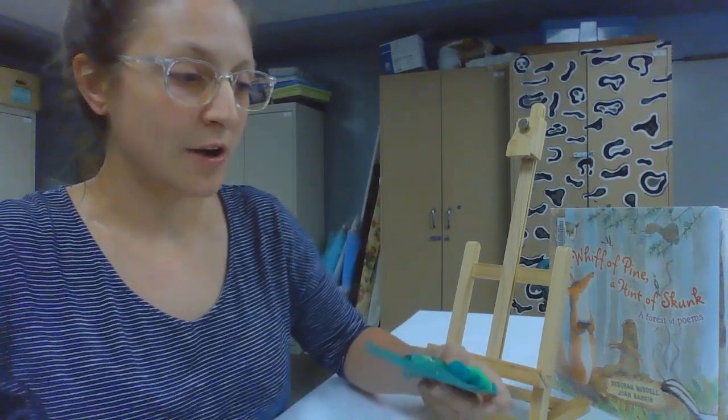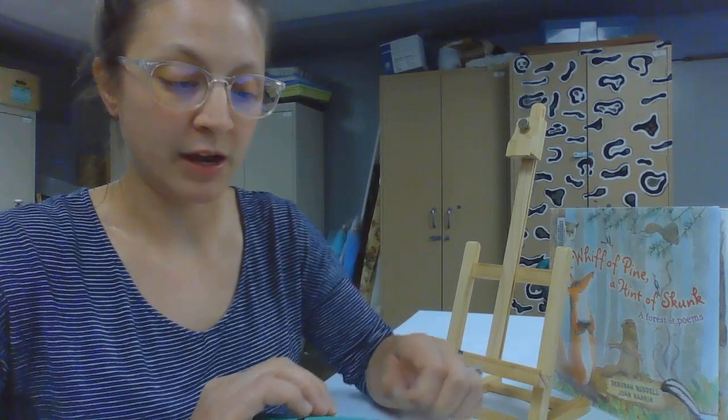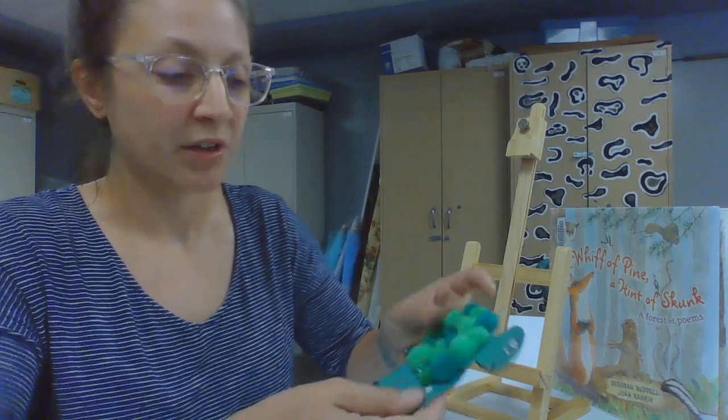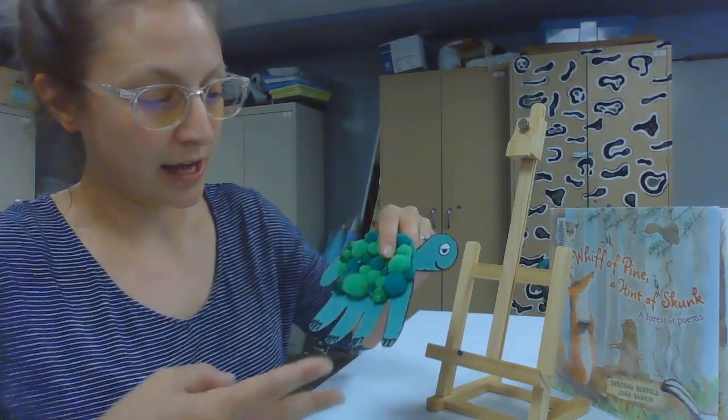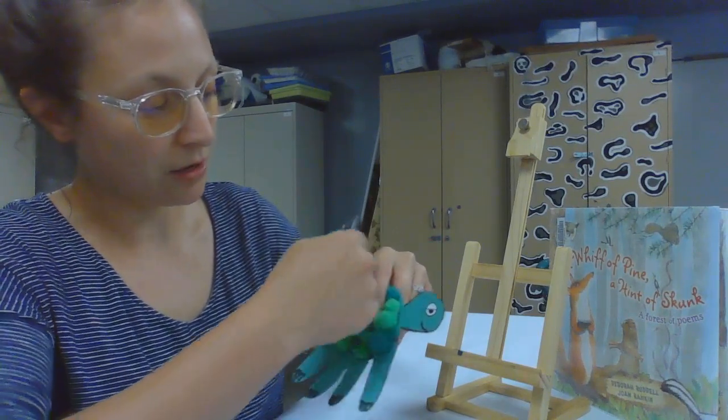So once you've cut out, now remember mini masters, you need some help from mom or dad to help you cut out your turtle. Using your scissors, you want to cut out your handprint, open and close, cut all the way around.